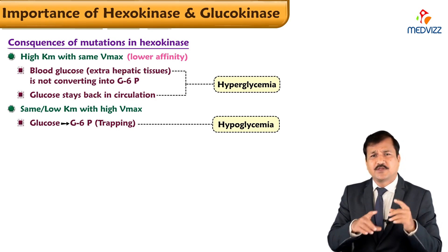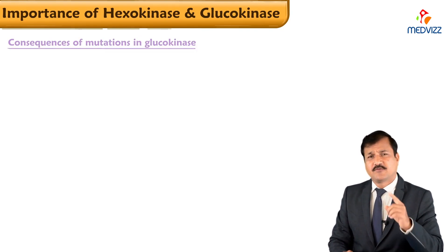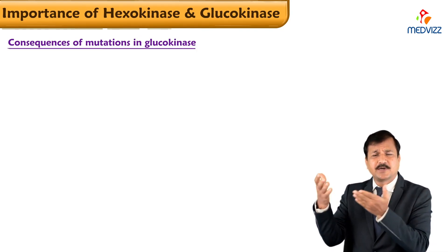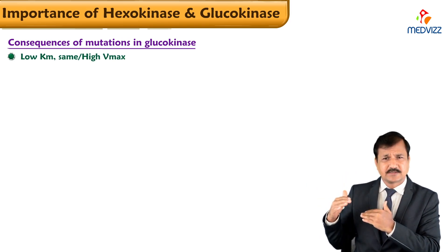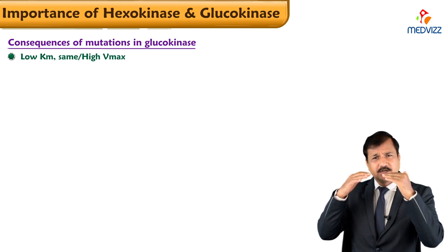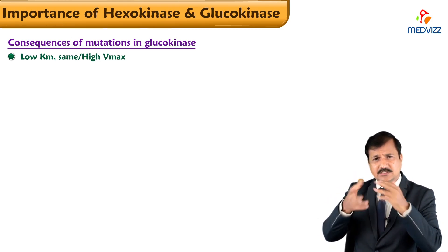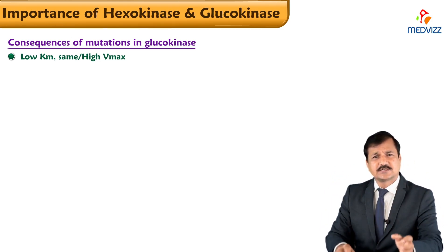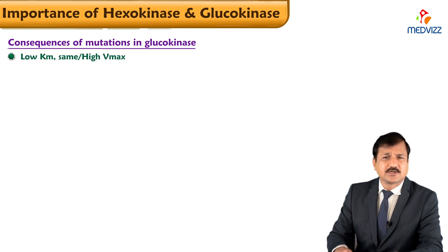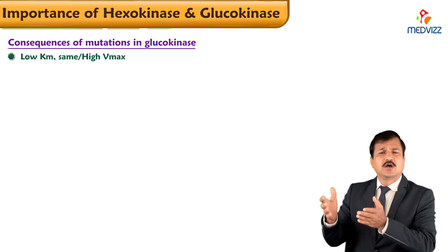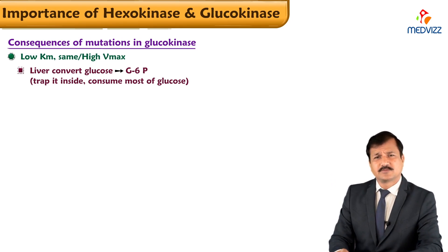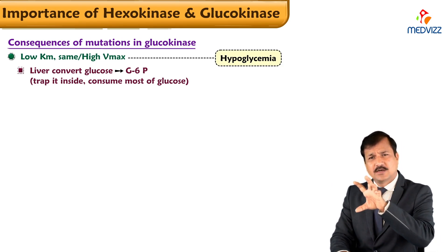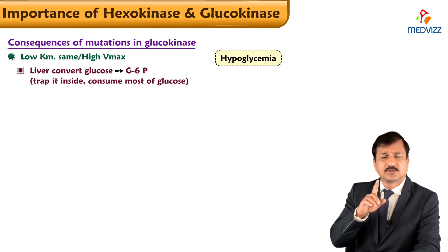Let us see what can happen if there is a change in the kinetic characteristics of glucokinase. Glucokinase is normally a high KM and high Vmax enzyme. If glucokinase has a low KM with the same high Vmax — a mutated low KM glucokinase — it will take up all glucose entering the cell even at low glucose concentrations like fasting. The liver would convert glucose to glucose-6-phosphate and trap it even during fasting, consuming most of the available glucose and leading to hypoglycemia.